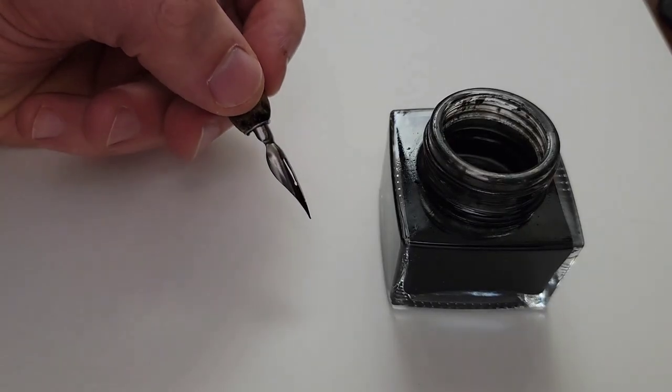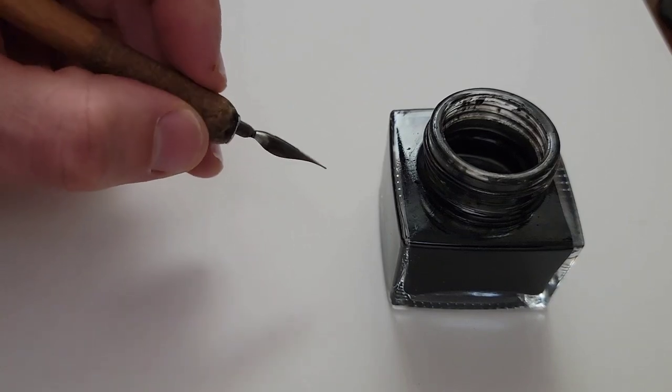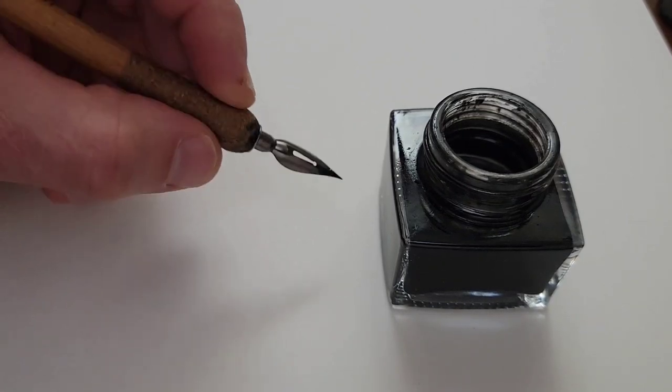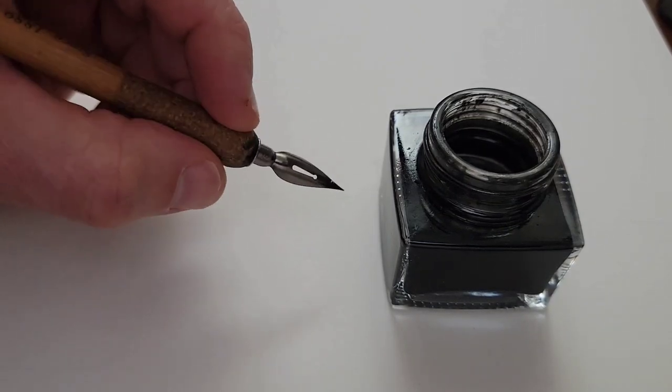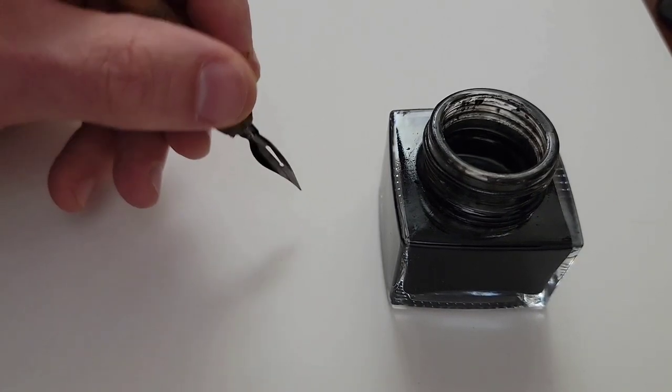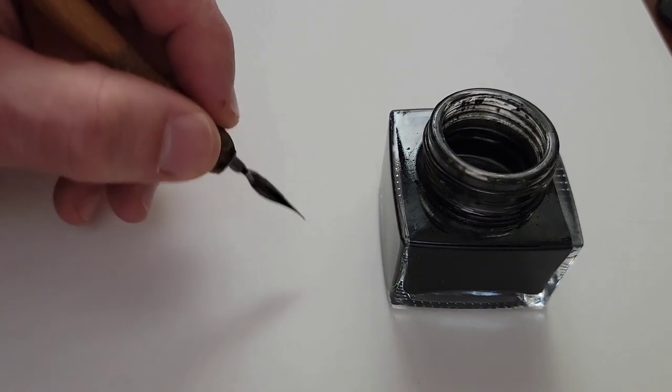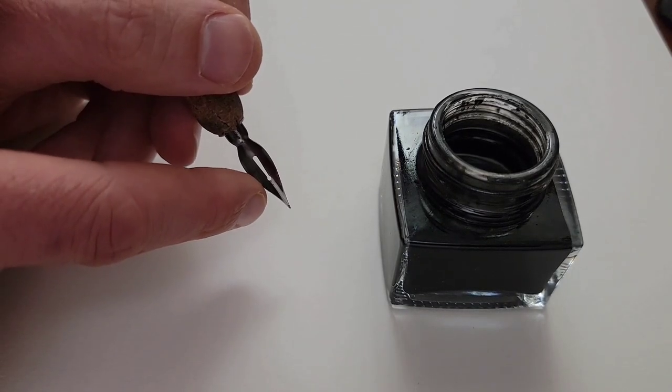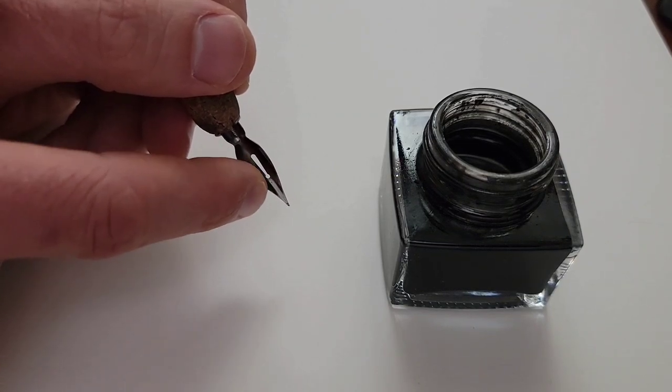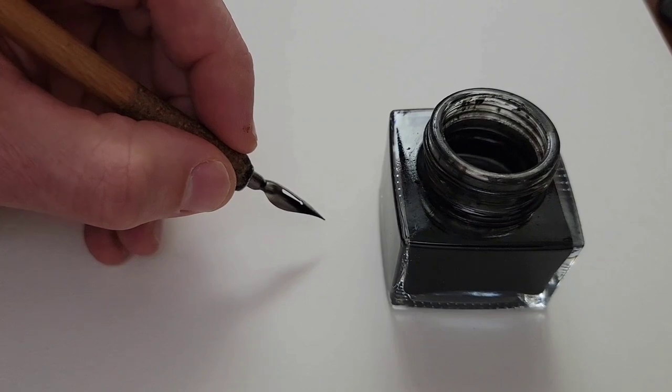First things first, and that is how to correctly hold the pen. We want to hold the pen with the concave surface facing down and that convex surface facing up. So it seems like the ink is going to run out of the pen, but in fact it will not. It will be held in the reservoir of the pen right here. And that is the correct way to hold the pen.